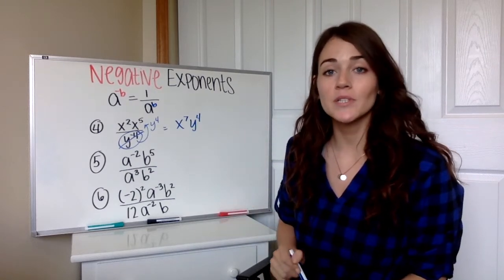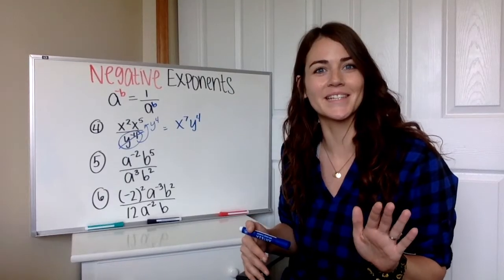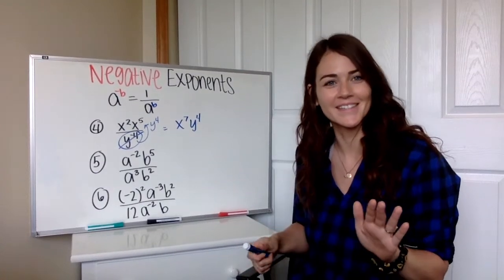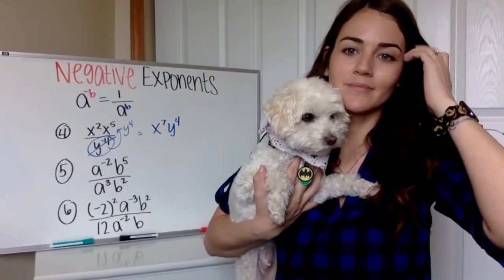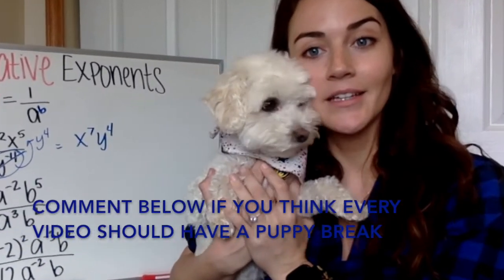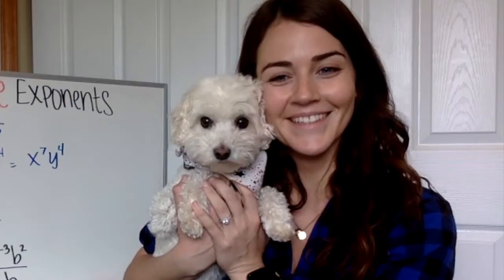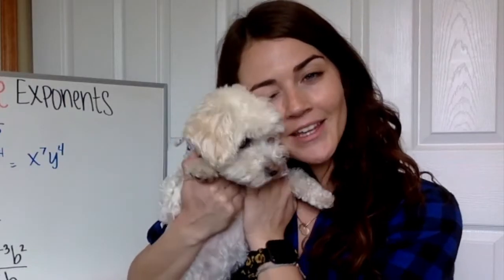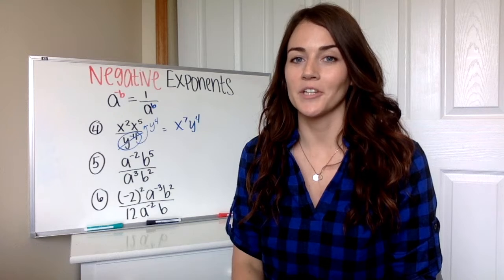Bentley really wants to get rid of the negative exponent! If you haven't watched my product and quotient rule video, Bella interrupted that one — this is Bentley. He decided he hates negative exponents and really wants to get rid of them. Having four dogs and trying to teach can be a challenge sometimes.